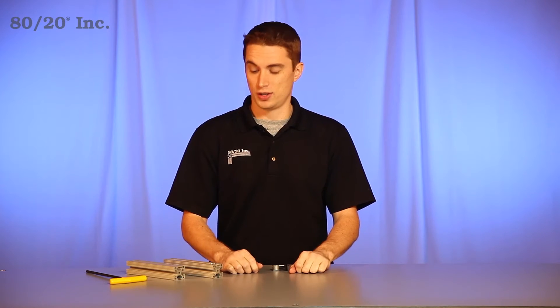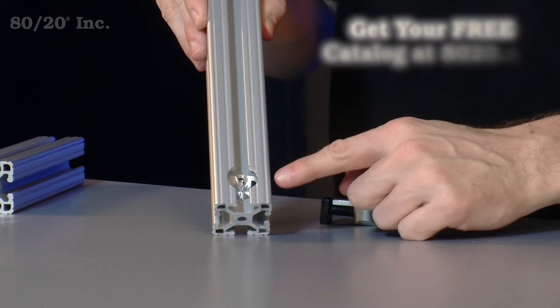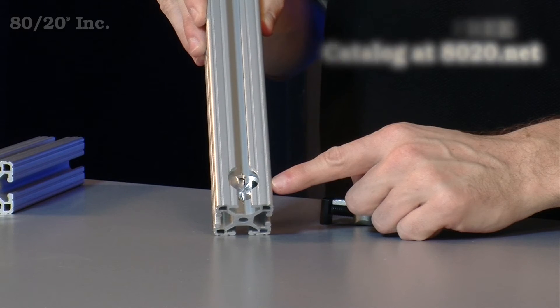Now keep in mind when you're using the anchor fastener, your bars will need a counterbore machined into them. For more information on the counterbore service, check out the 8020 product catalog.